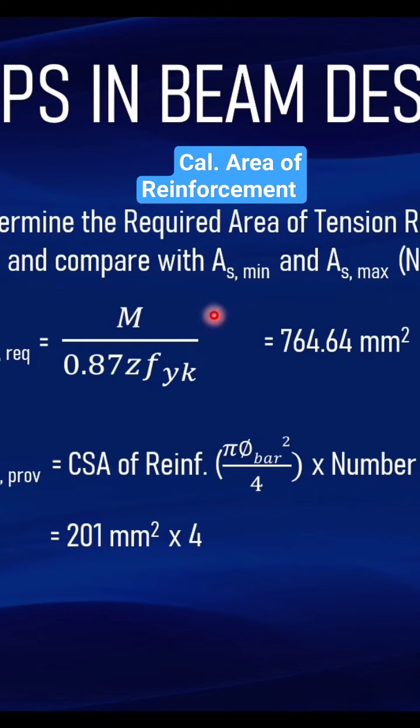Because we have to provide something slightly higher than required, we are assuming 4 bars. Therefore, the area we obtain is 804 mm².